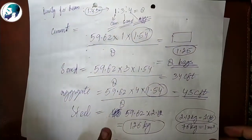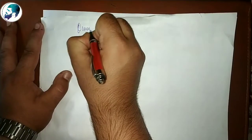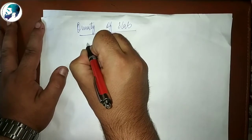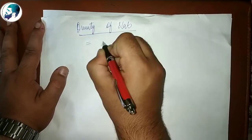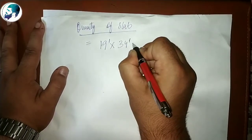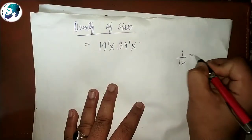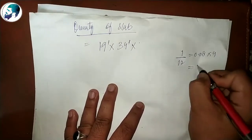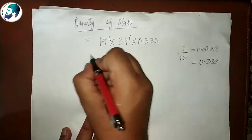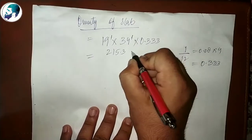Quantity of slab: the length is 19 feet, breadth is 34 feet, and height of slab is 4 inches. Converting 4 inches: (1/12) × 4 = 0.333 feet. So total quantity of slab = 19 × 34 × 0.333 = 215.3 CFT.